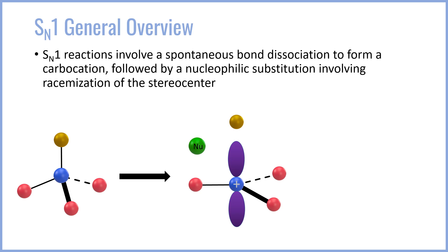Next, we have the nucleophile, which can then approach and attack that empty p-orbital from either side, either the top face or the bottom face, with no preference because the cation is planar.